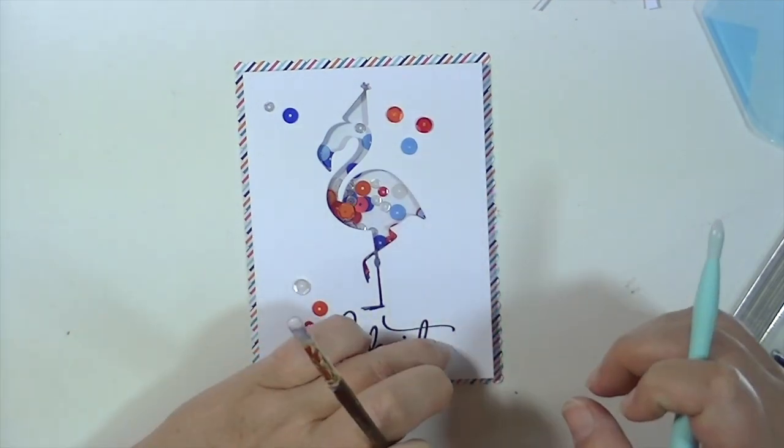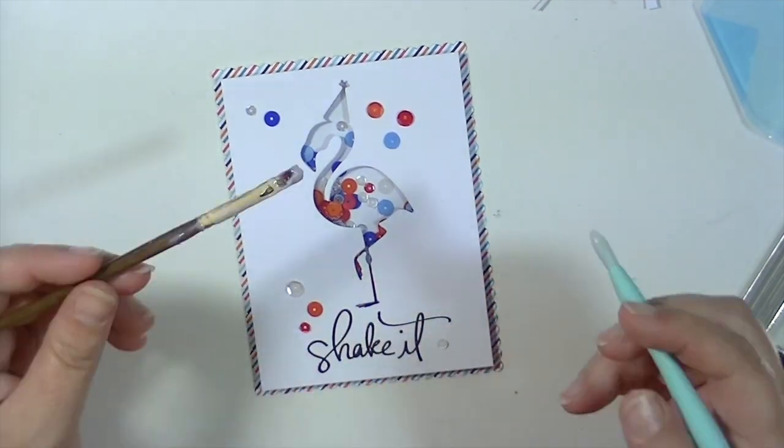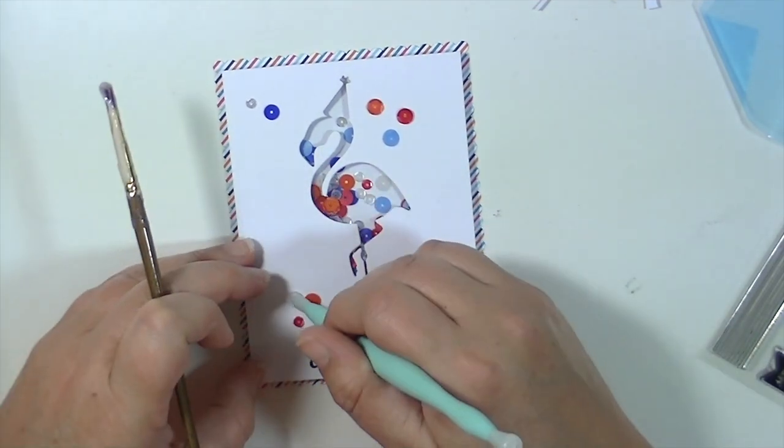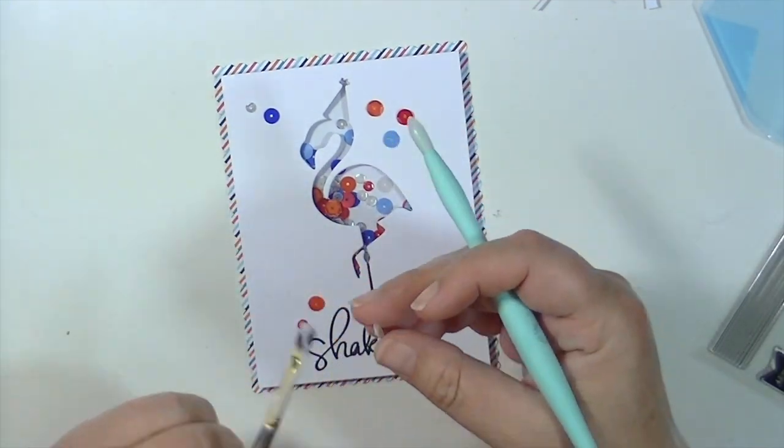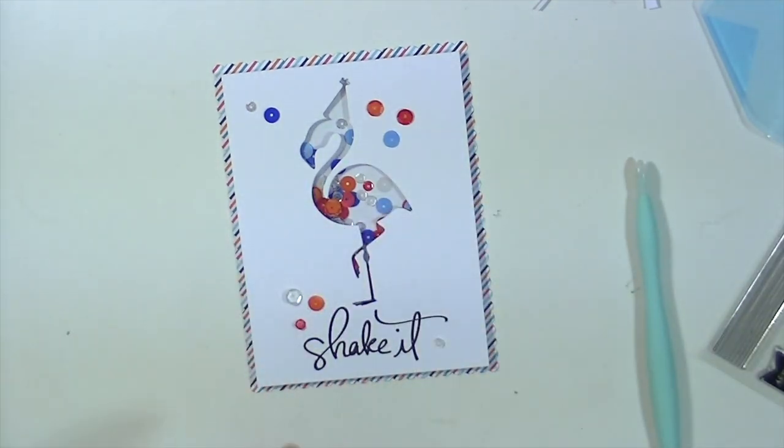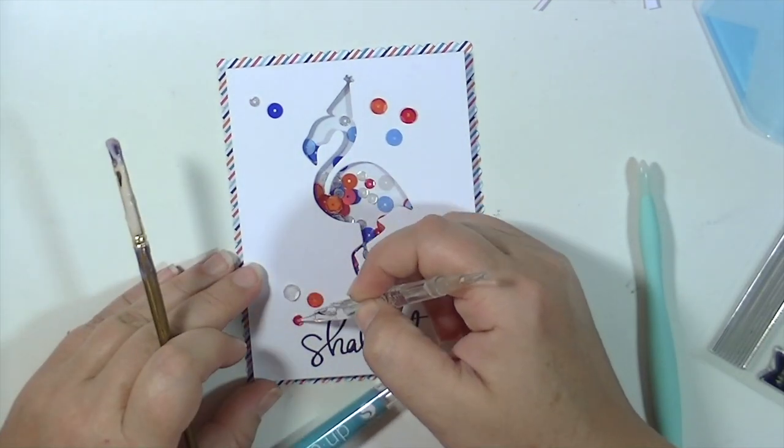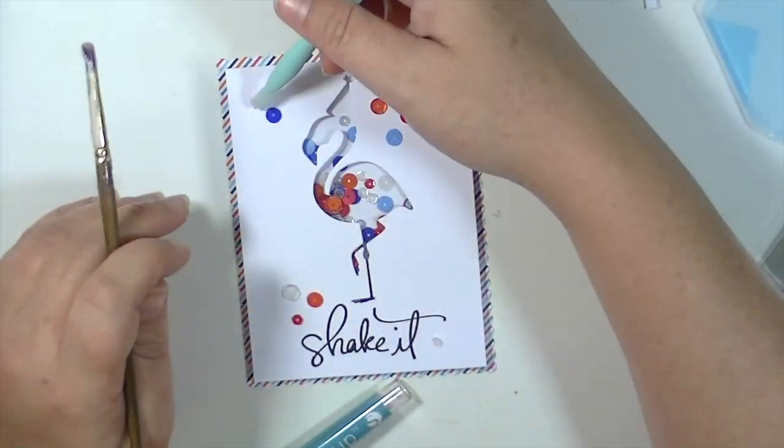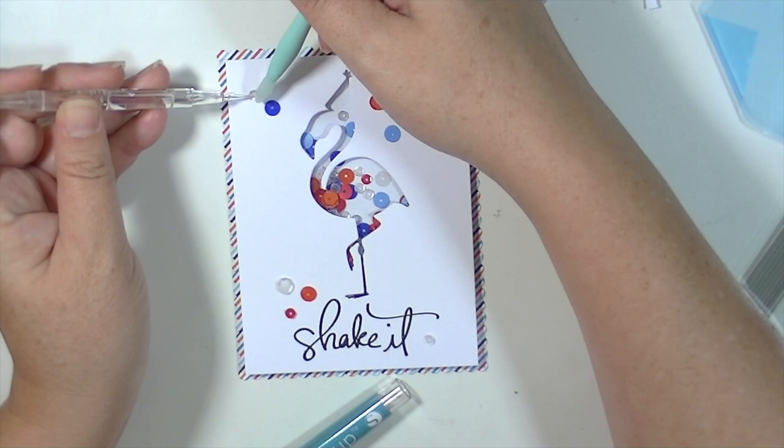And that's going to finish up this card. So these shaker cards are really fun and versatile and you can make them masculine, make them feminine, however you want by changing up the colors and I love a different way to use an image die instead of just having a shaker card that's like a circle or something, to have it be a little birthday flamingo.